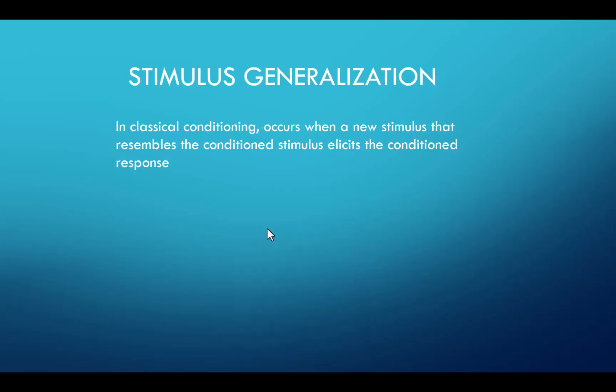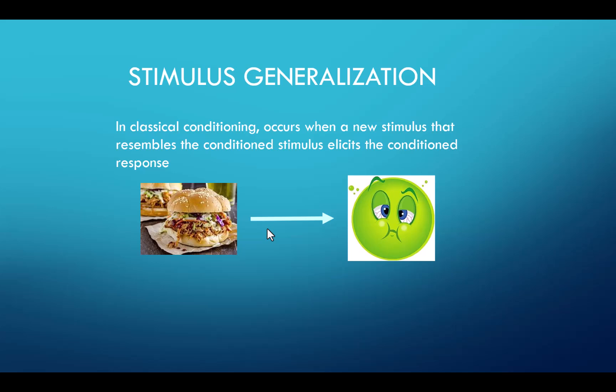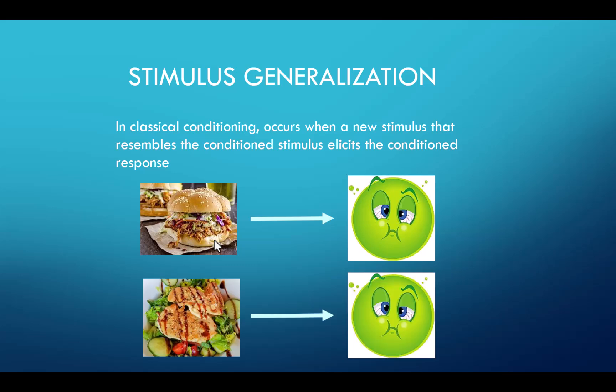Stimulus generalization occurs when a stimulus that resembles the conditioned stimulus elicits that learned response — something that's not the conditioned stimulus itself, but resembles it in some way. For example, let's say you go out to a restaurant and had some undercooked pork, went home and got sick. The original conditioned stimulus is the pulled pork, but now not only does any type of pork — the thought, sight, or smell of it — make you sick, but chicken does too because chicken kind of resembles pork. You're generalizing from the pork to the chicken.